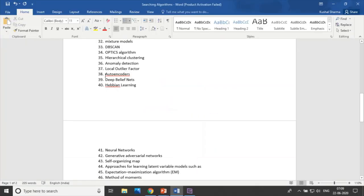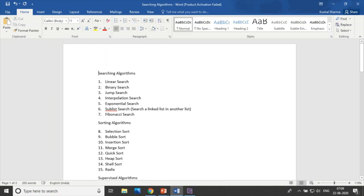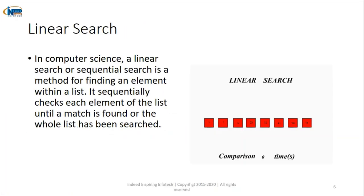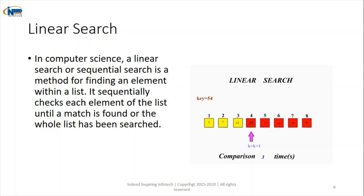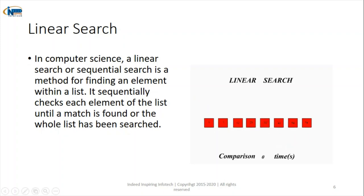This is the list which will help us maintain the record of all the algorithms. Starting with searching algorithms — linear search. Linear search is a sequential search: it goes from element 1 to 2 to 3 and so on, sequentially checking for the item to be searched. In this animation, we want to search for the element 54. We start from the first position, then second, then third, then fourth, comparing at each step. Ultimately, we find 54 at the seventh position.